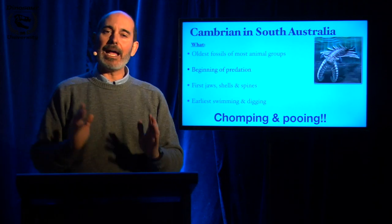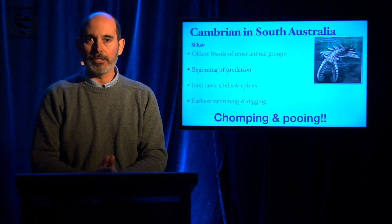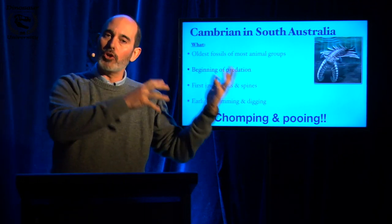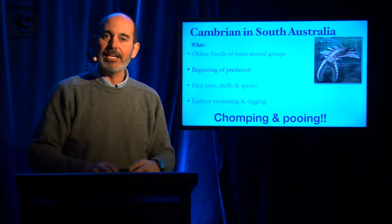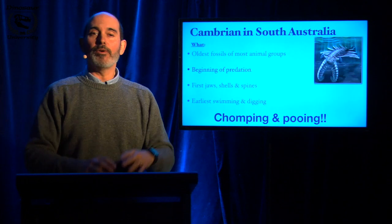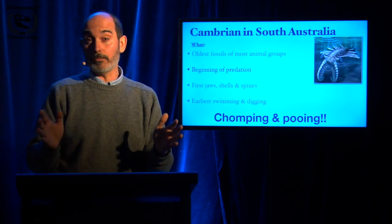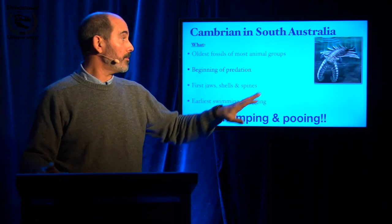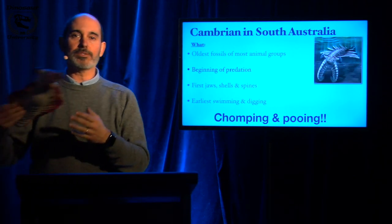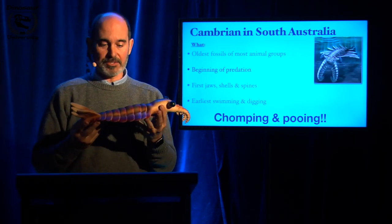The next thing that happens in the Cambrian is the appearance of predation — the capacity of some animals to feed on other things. There's no evidence of that in the Ediacaran. We've got thousands of fossils from the Ediacaran, and none of them have a single bite mark. However, by the time we get to the Cambrian, we've got animals like this here. We've got large predators.